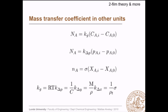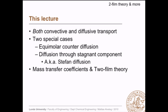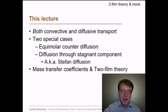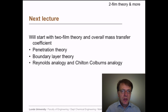In this lecture we have talked about both convective and diffusive transport, two special cases — equimolar counter diffusion and diffusion through stagnant component (also known as Stefan diffusion) — and two-film theory with mass transfer coefficients. In the next screencast we will discuss the connection between two-film theory and the overall mass transfer coefficient, then turn our attention to penetration theory, boundary layer theory, and Reynolds analogy as a special case of Chilton-Colburn's analogy.